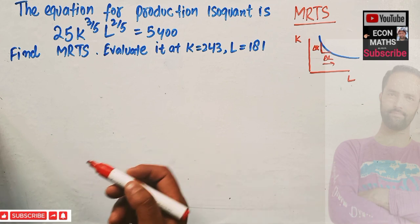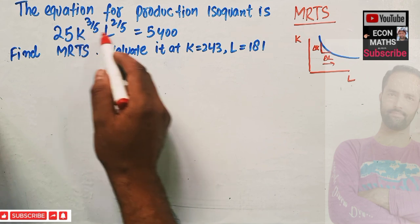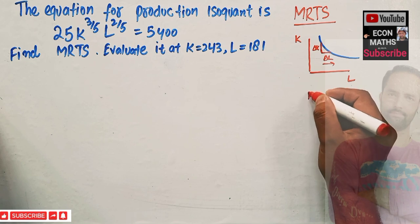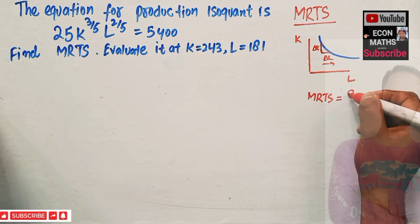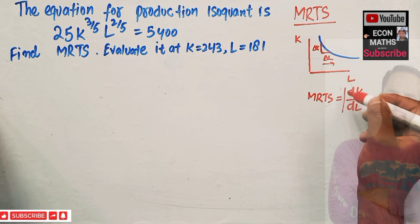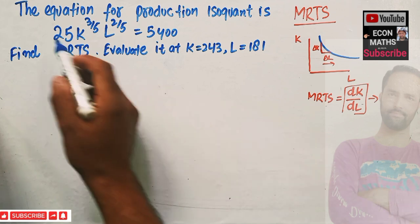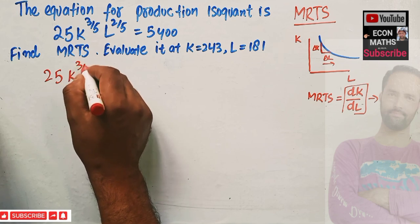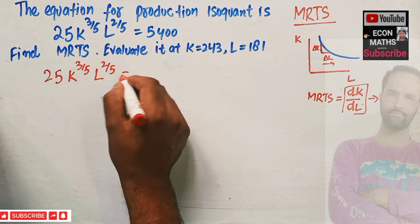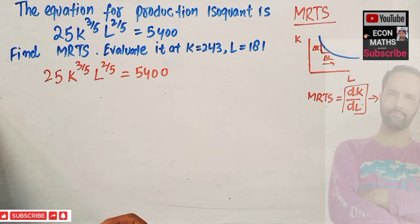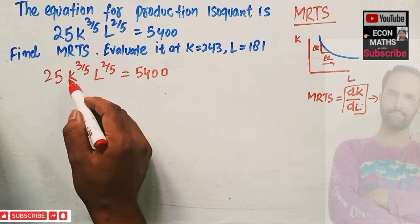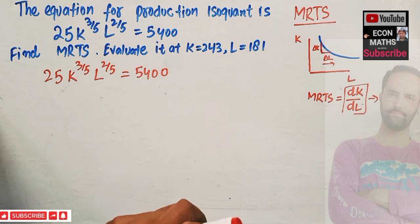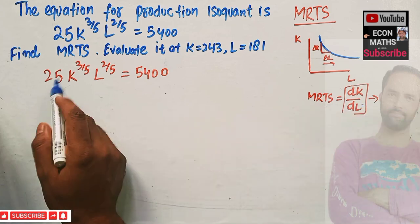To find the MRTS, we treat K as a function of L and use the product rule to find DK upon DL. MRTS means finding DK upon DL — that is, the change in capital with respect to labor. So here we write the equation again: 25K to the power 3/5 times L to the power 2/5 equals 5400. Our MRTS is DK upon DL, which we find by applying the product rule.